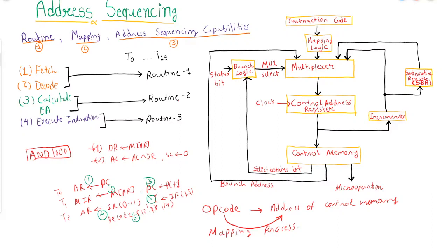In control memory, we simply specify the control address register — that address will be looked up and the control word or micro-operation will be forwarded directly from control memory. There is no need for a control data register; that word will be available as long as the control address register holds the same address. On the next clock cycle, a new address is loaded into the control address register and a new micro-operation, or control word, becomes available.